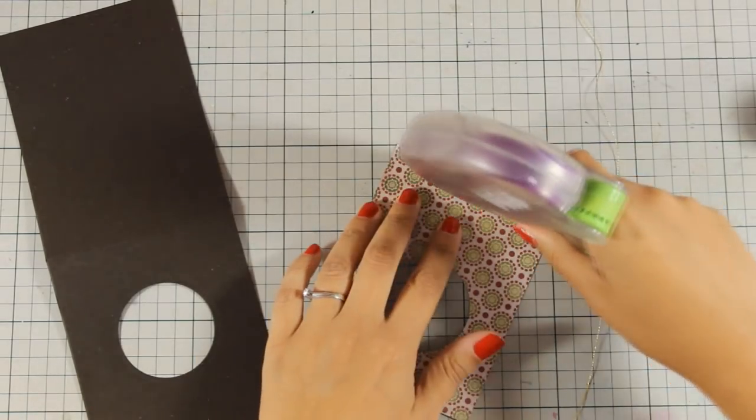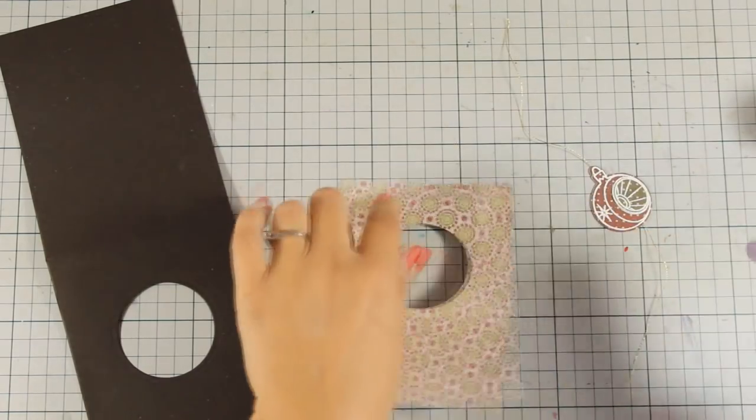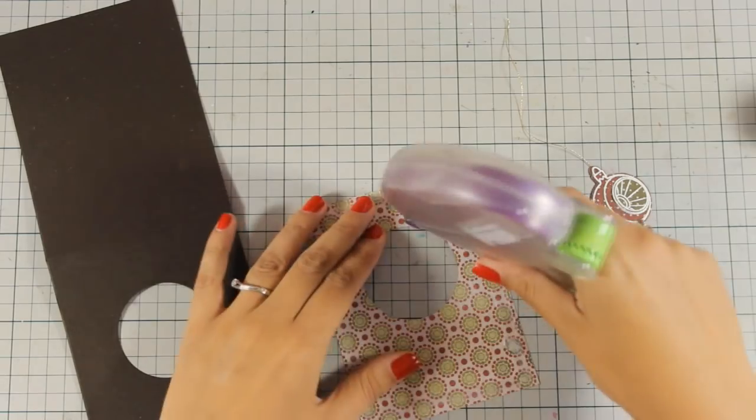Now all I have to do now is to add some tape adhesive at the back of my panel. I am going to make sure that I go all over the outside as well as the inside around the hole there.